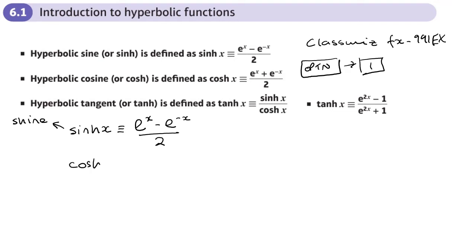The hyperbolic function for cos — pronounced 'cosh' — is defined very similarly to sinh. There's just a plus sign instead of a minus sign between the two e to the x terms. So cosh(x) is e to the x plus e to the minus x, over 2.